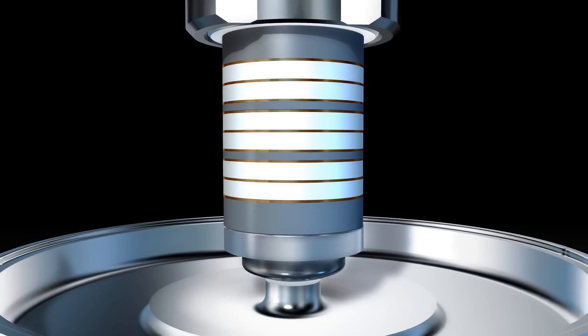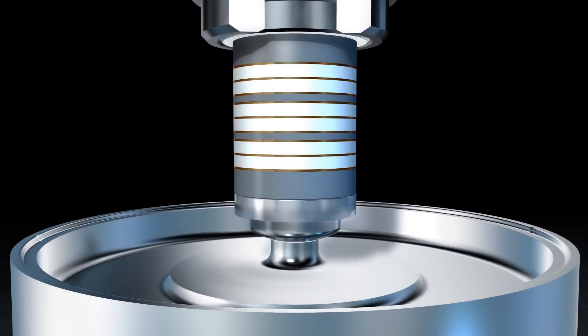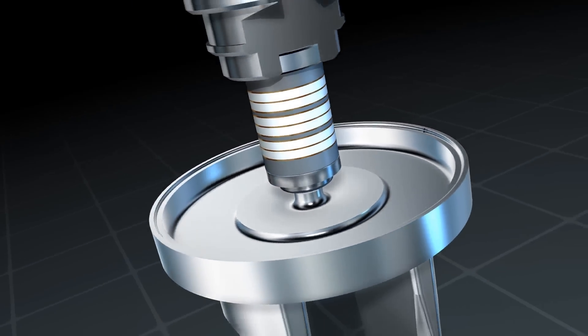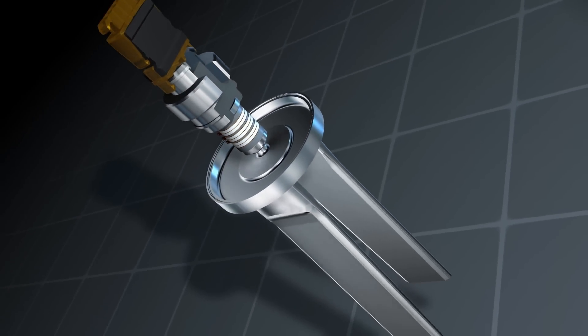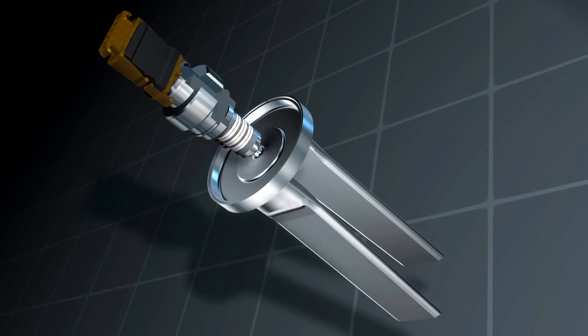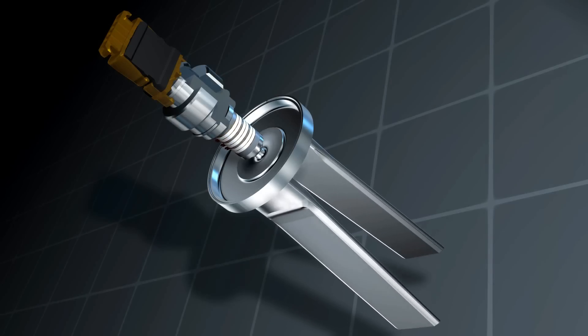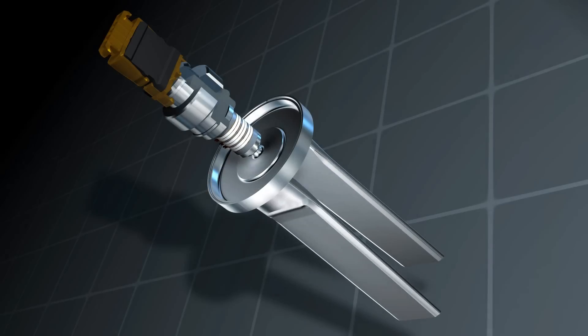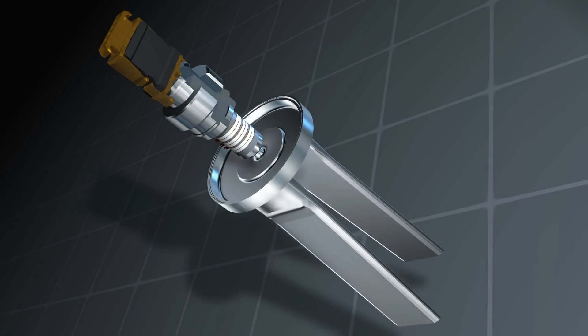As the piezos expand, the membrane is bent to the outside. The ends of the tuning fork, which is attached to the membrane, are pushed apart. As the piezo contracts again, the membrane is bent to the inside. The ends of the tuning forks are pulled together.